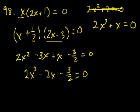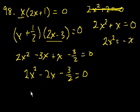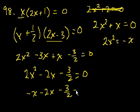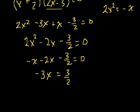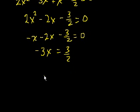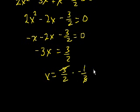Since 2x² equals −x, substituting gives −x minus 2x minus 3/2 equals 0, so −3x equals 3/2. Adding 3/2 to both sides and dividing by −3: x equals 3/2 times −1/3, which equals −1/2. That is choice B.